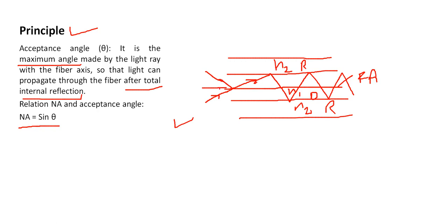This is the maximum angle — for example, 30 degrees. If the angle is 30.1 degrees, the light ray will not be reflected, because the angle at the core-cladding interface becomes less than the critical angle. For example, if the critical angle is 60 degrees and the incident angle is 30.1 degrees, the interface angle drops below 60 degrees. Light incident at less than 30 degrees — such as 29, 28, or 27 degrees — will be transmitted through the core of the fiber after total internal reflection.